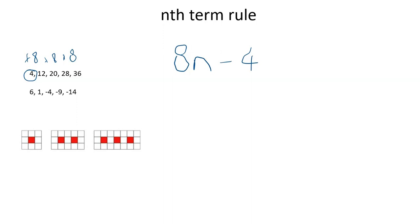If that sequence was the same but all taken one off, so if it was 3, 11, 19, etc., then it would be 8n take away. Well, to get from 8 down to 3, you take away 5. So it would be 8n minus 5.